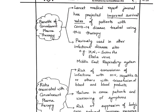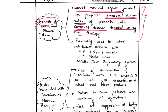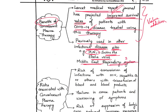Moving to the benefits of convalescent plasma therapy, the student writes that the Lancet Medical Journal has projected improved survival rates of patients with COVID-19 treated using this therapy — a good value addition citing a specific report. He also notes it was previously used in other infectious diseases like H1N1 swine flu, Ebola virus, and Middle East Respiratory Syndrome (MERS). This is a well-rounded benefits section — using COVID-19 here is appropriate since it is one of many diseases for which this treatment is relevant.